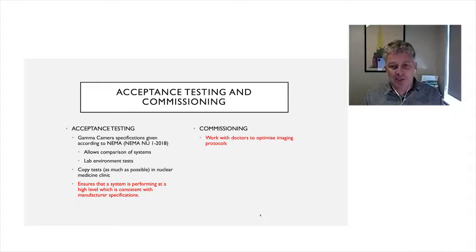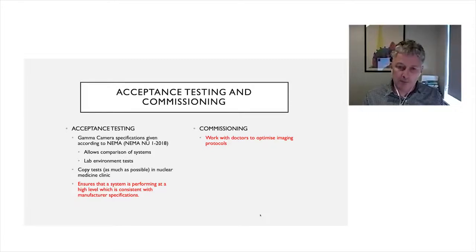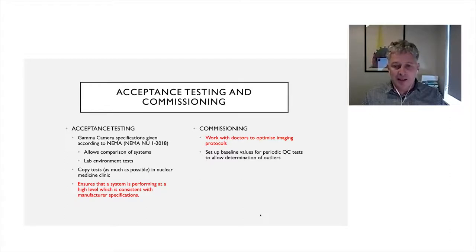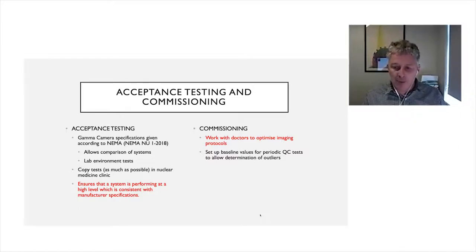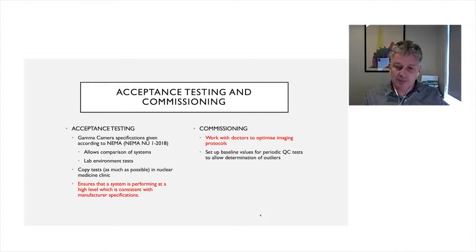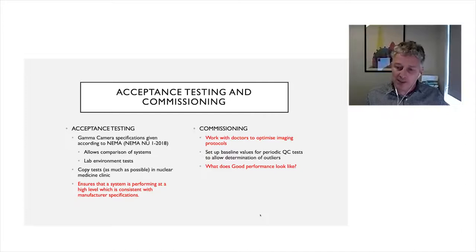Commissioning really has two steps. The main one is working with doctors to optimize imaging protocols and make sure all scanning protocols produce the images needed for clinical reporting. The second element is setting baseline values. Immediately after acceptance testing, the camera is at its highest performance level — a perfect time to run repeat periodic QC tests and establish a range of what the gamma camera is capable of. Then during routine periodic quality control, we can check whether daily or monthly values fall outside these baseline values.